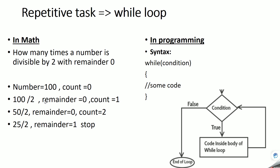Initially we can divide 100 by 2 and the remainder was 0, so the condition was true the first time and the second time. The control keeps going back. The third time, the condition became false because the remainder became 1, so execution stops when the condition becomes false.